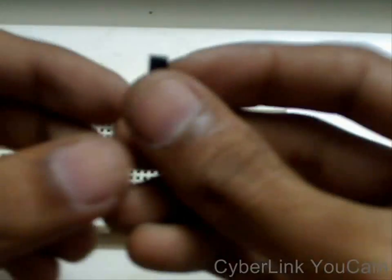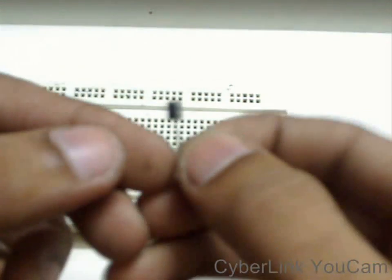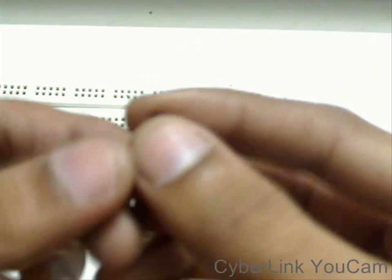For this, what we need is just a single transistor. For this project, we are choosing a BC547 transistor because it is the most available transistor and also a cheap transistor.